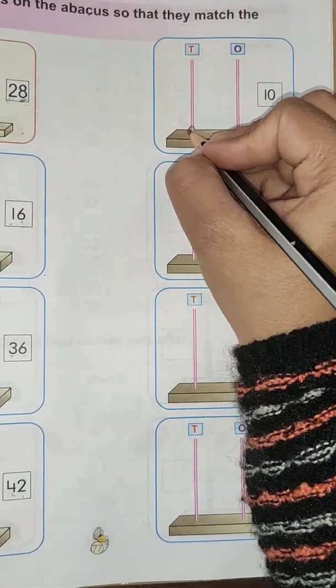Clear children? Hope you all have understood this page, the concept of ones and tens. Now you will complete this page in your Kindergarten Mathematics book. Okay children? Thank you. Bye-bye.